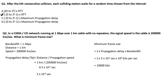Next question: In a CSMA/CD network running at 1 Gbps over a 1 km cable with no repeaters, the signal speed in the cable is 2 lakh km per second. What is the minimum frame size? The given values are: bandwidth = 1 Gbps, distance = 1 km, no repeaters meaning a single shared cable.